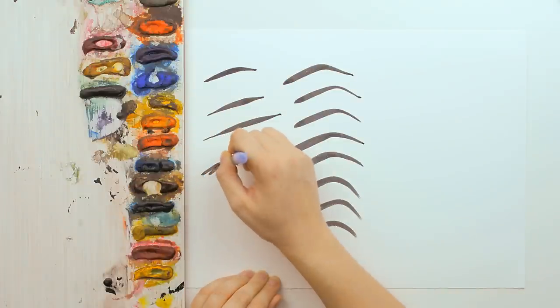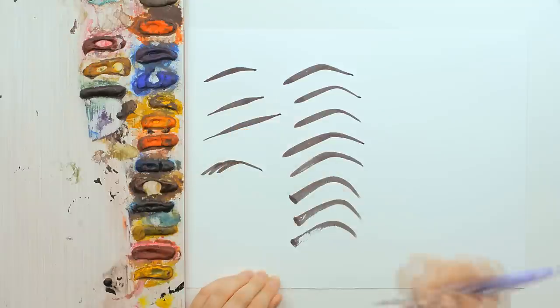Then get to the third exercise. Use multiple lines to create the impression of the eyebrow hairs.